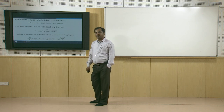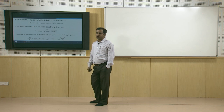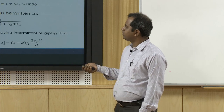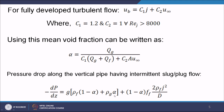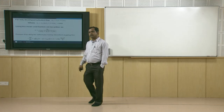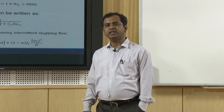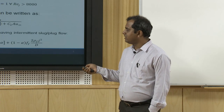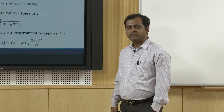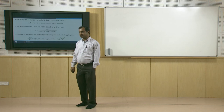Beyond void fraction and bubble velocities, pressure drop is also important. The pressure gradient −dp/dz equals the buoyancy term g·[ρ_f·(1 − α) + ρ_g·α] plus the frictional term (1 − α)·f_f·2·ρ_f·j²/D. Since finding separate liquid and gas superficial velocities in slug flow is difficult, we express the frictional pressure drop using the fluid-part assumption with overall superficial velocity j and friction factor f_f, which was discussed in previous lectures.